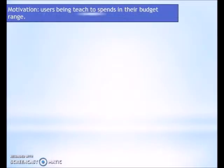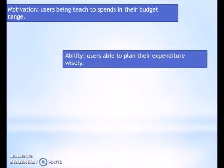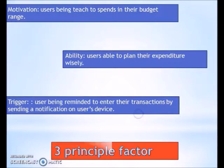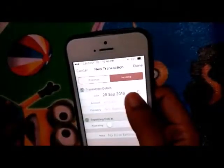The three principal factors that affect human behavior are: Motivation — users being engaged to spend within their budget; Ability — users able to plan their expenditure wisely; and Trigger — users being reminded by sending a notification on the user's device.